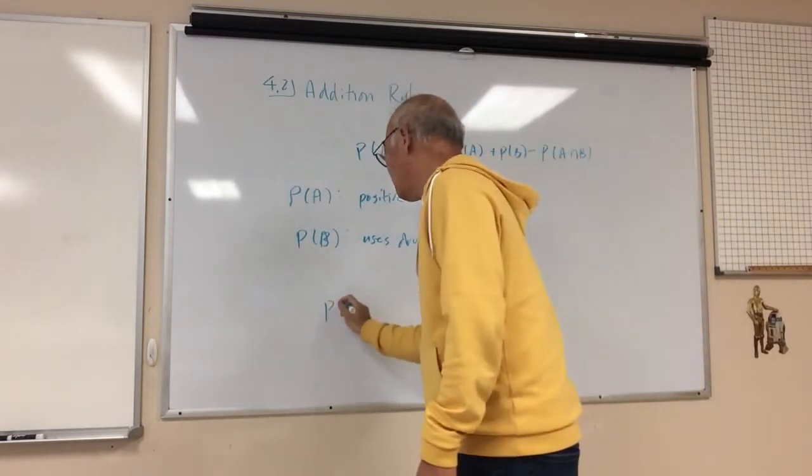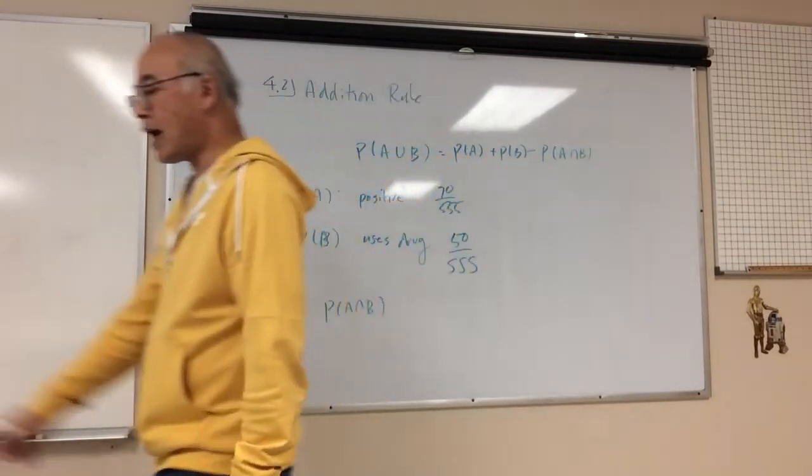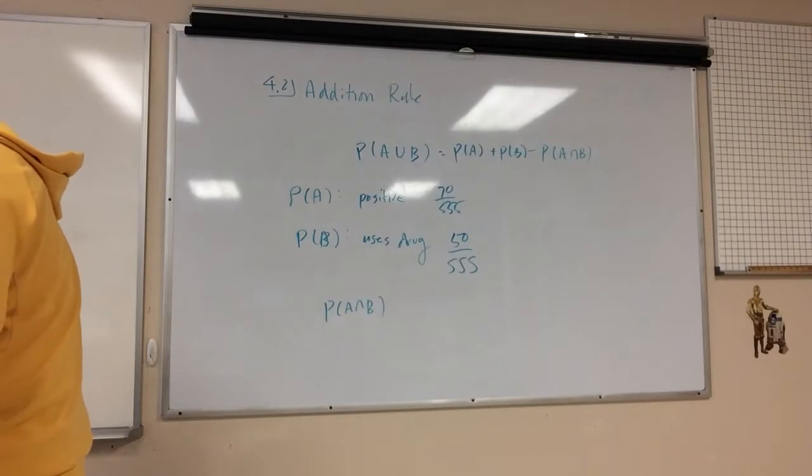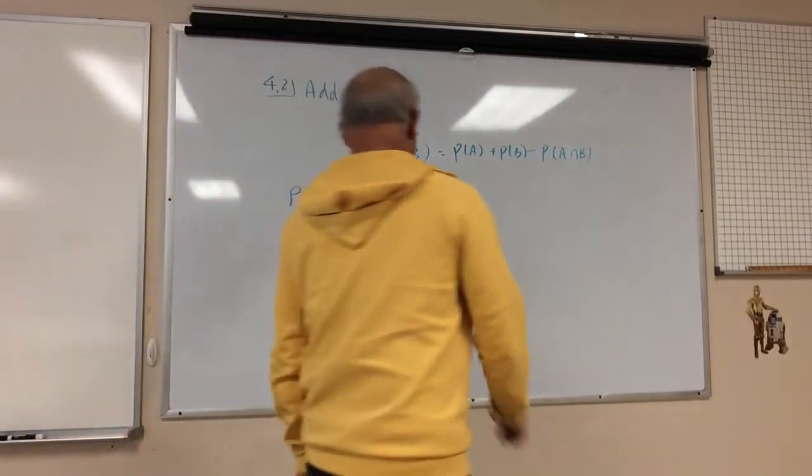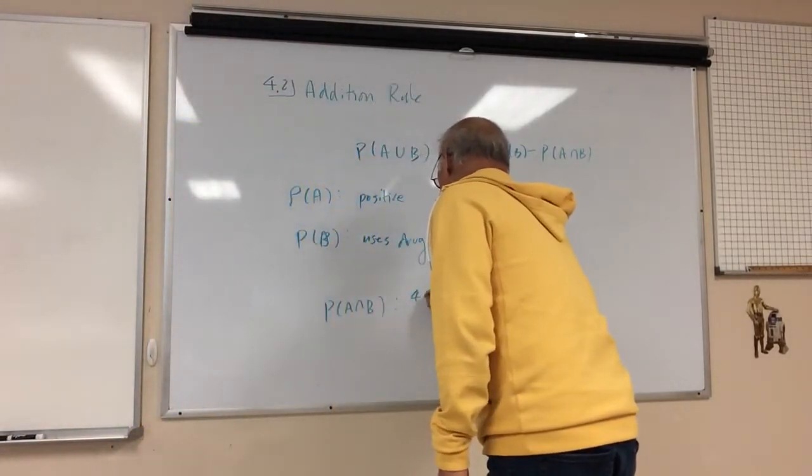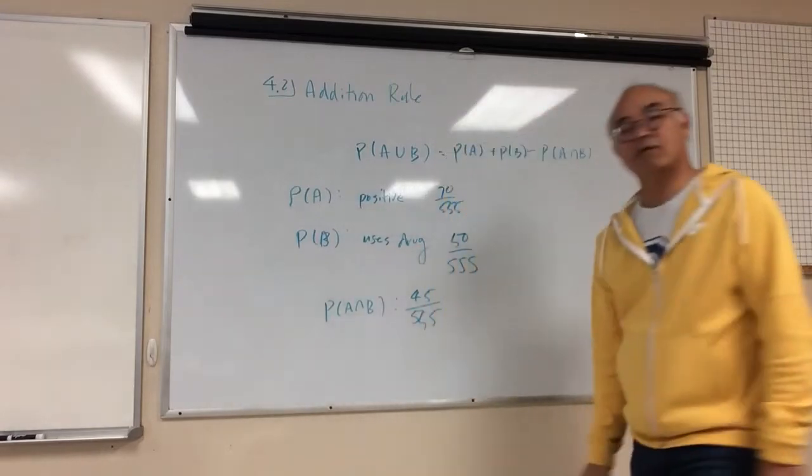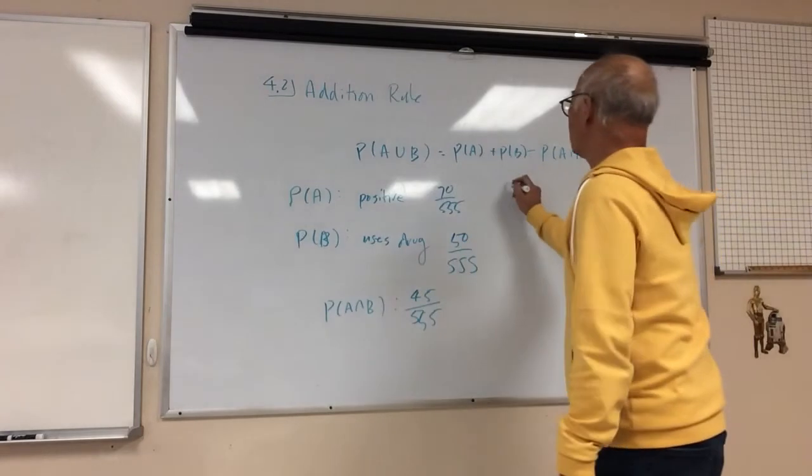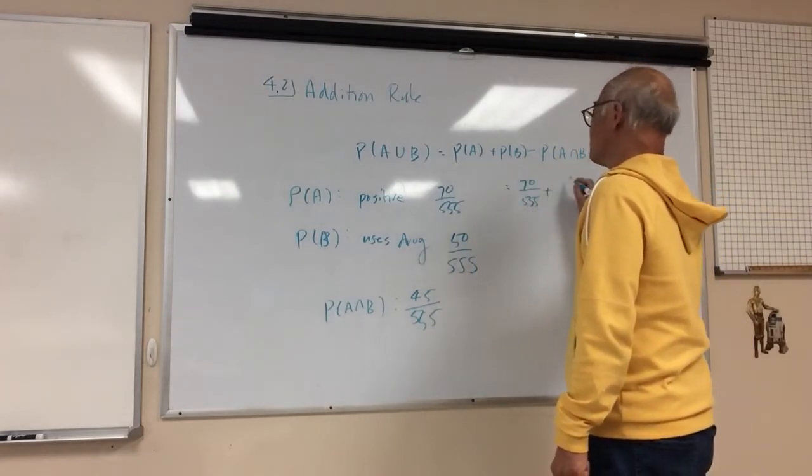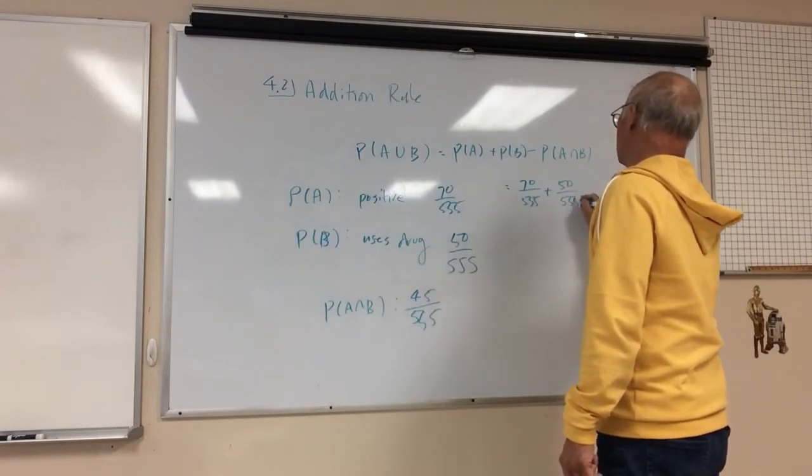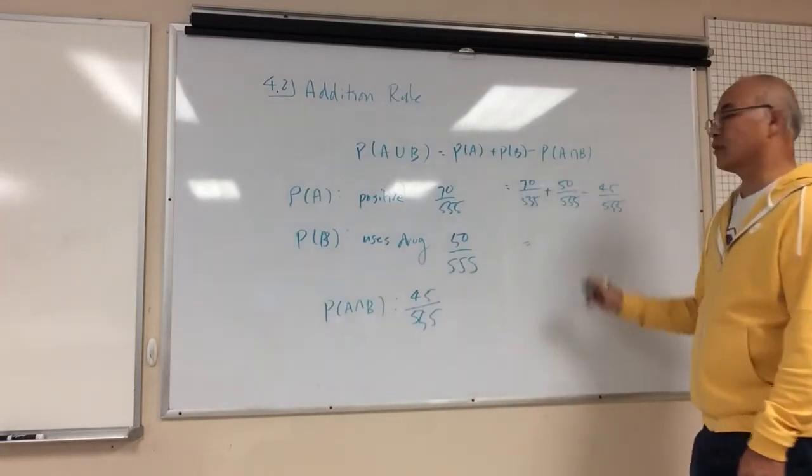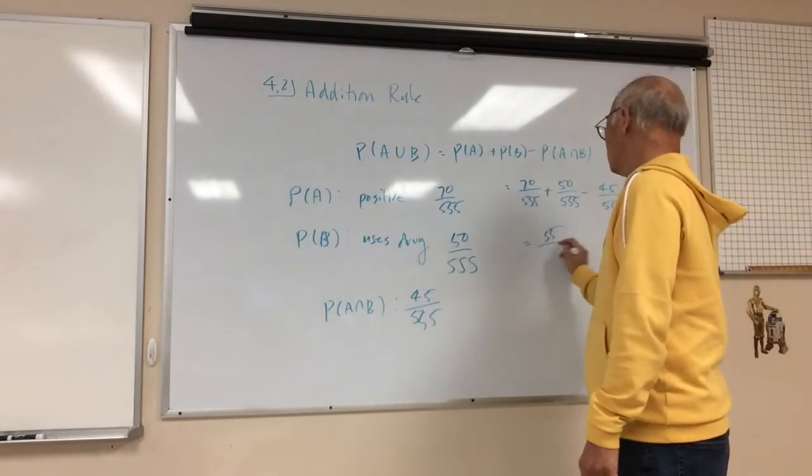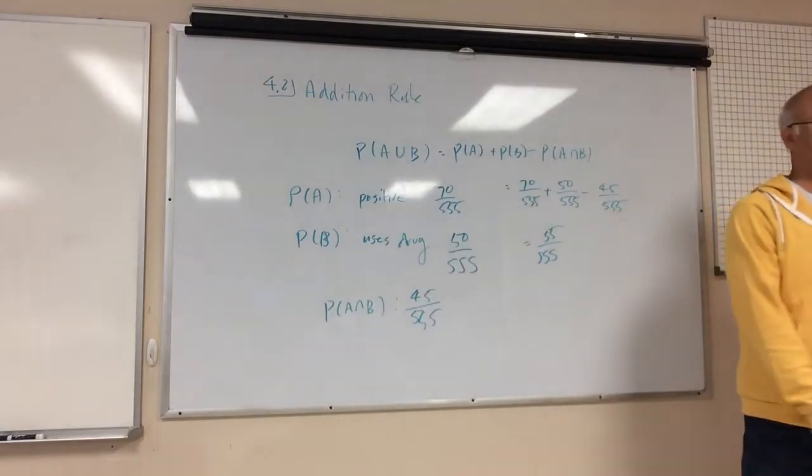So probability of being positive is positive test result is 45 plus 25, right? So that's 70 over 555. And then the probability of uses drugs is 50 over 555, because there's 45 and 5. So this is going to be equal to P A plus P B minus P A and B. What is the probability of P A and B here? What is the probability of being positive and using drugs?